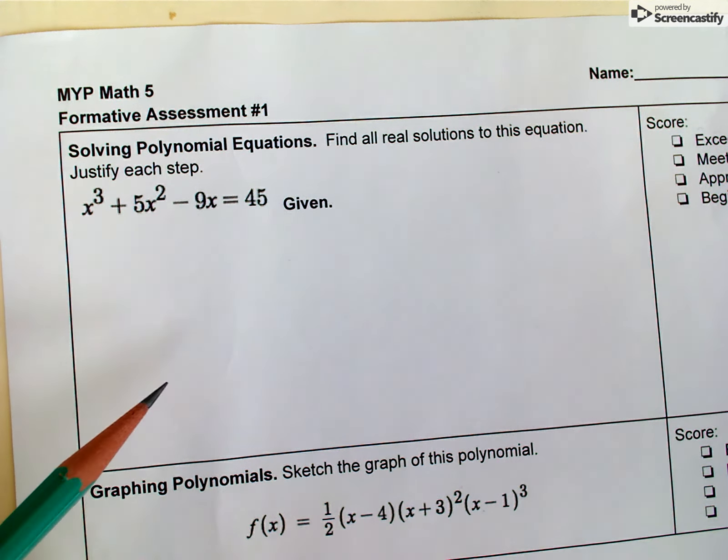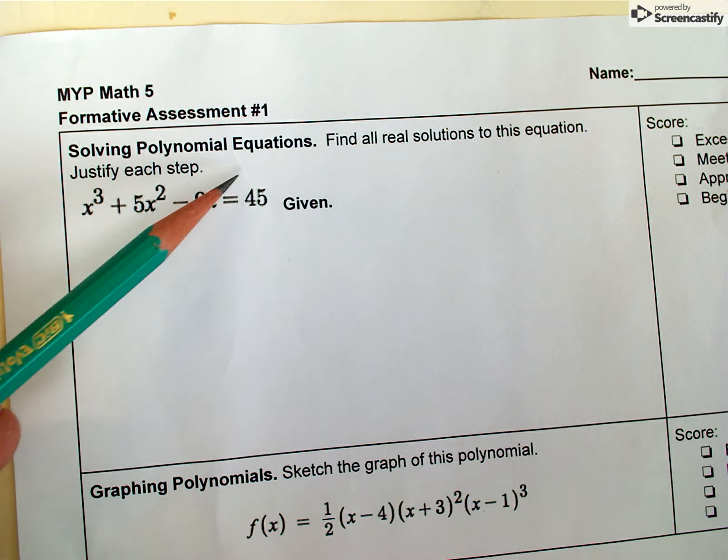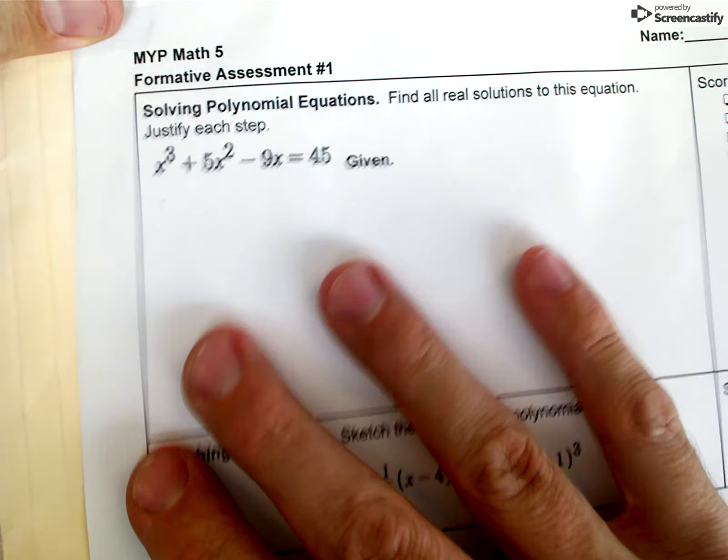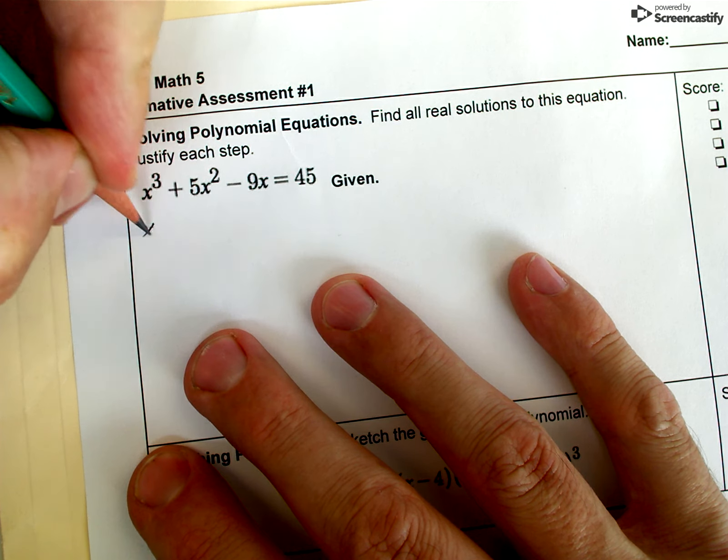I want to demonstrate this. First of all, notice this is a polynomial of third degree, and really the way that we want to think about our first attempt to solve this is to see if we can factor it and use the zero product property to find a solution.